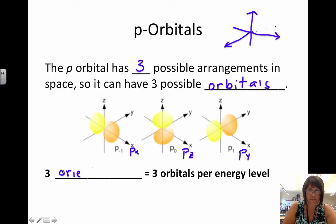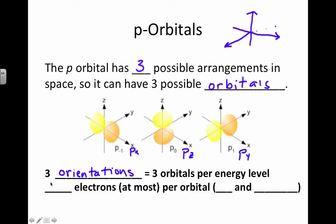So I have three orientations. In other words, three orbitals per energy level. And each orbital can hold, at most, two electrons, one that's spinning up and one that's spinning down. Then that means for two electrons in three orbitals, that makes six electrons total to fill all three orbitals completely full.